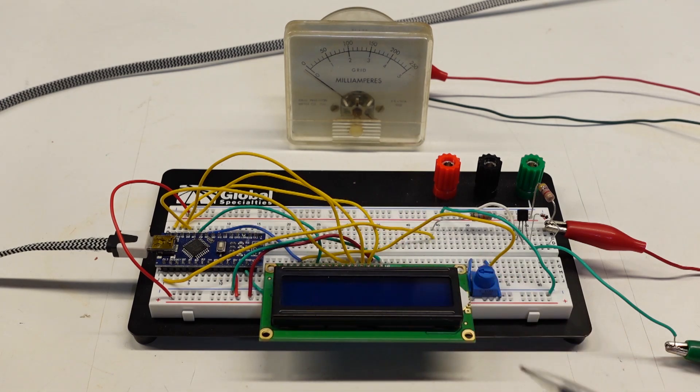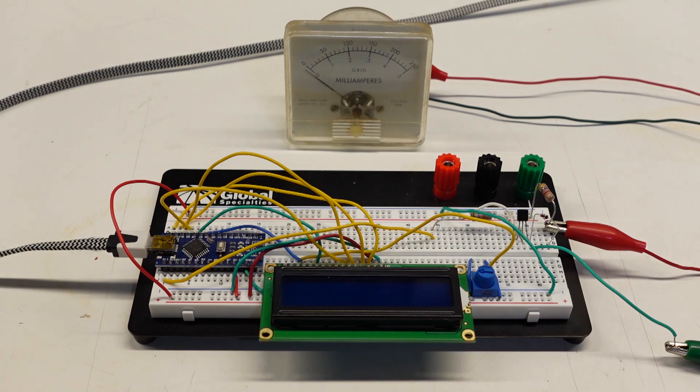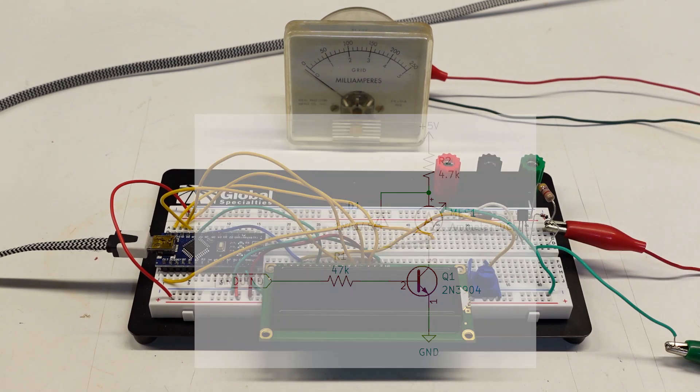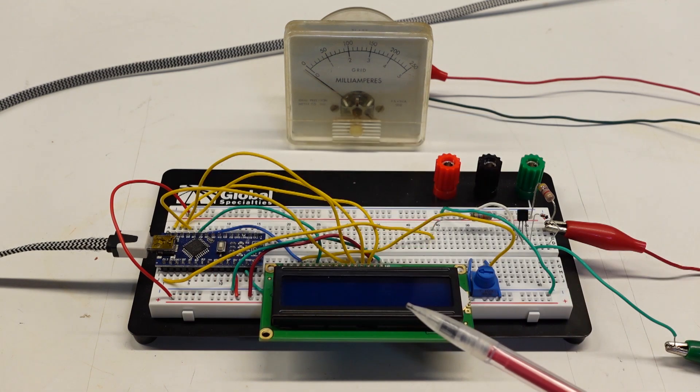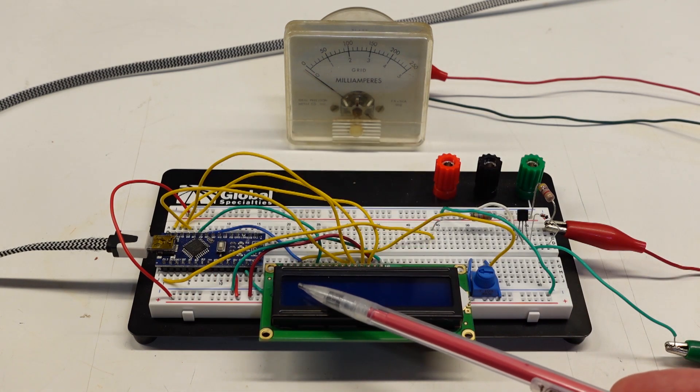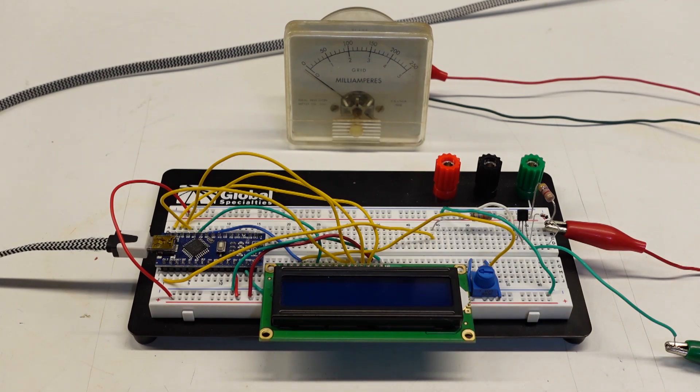I already had this board and display just sitting around from a prior project that I had put on the bookshelf for a while, and all I did was add a simple 2N3904 driver transistor. I'll put a sketch of the circuit on screen. It is very simple, and I just wrote a few lines of code to come on for one second and off for one second, and then also just for grins to show on the display here a running counter of how many times it's done it.